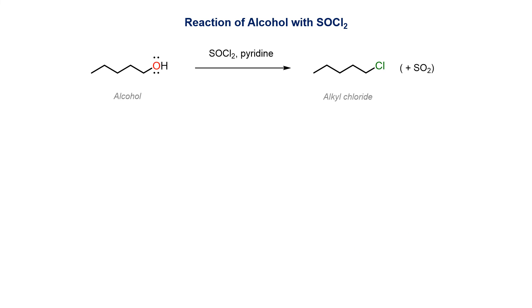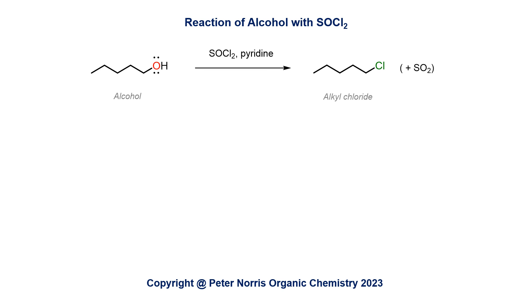This method represents a mild alternative to the use of HCl for converting alcohols to alkyl chlorides. Thionyl chloride and pyridine react here under mildly basic conditions that will be compatible with a wide variety of other functional groups.